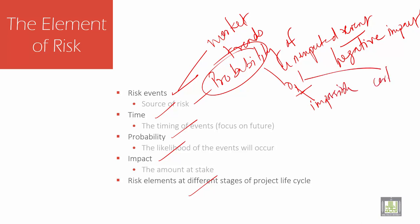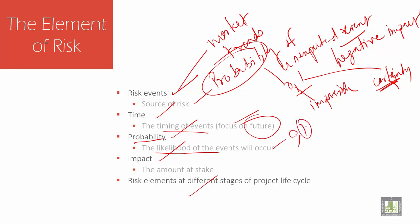And 1 indicates certainty — it can certainly be done. So higher the probability of an event, the more likely the event might occur. Time is the timing of events, focused on future scheduling. Probability is the likelihood from 0 to 1. Impact is how effective it is done — the amount of stake. And risk elements are the various stages of the project life cycle, which have to be taken care of.